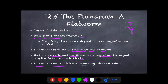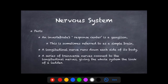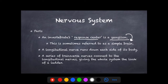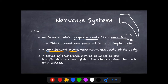Planarians show bilateral symmetry, which means they are identical on each half. Let's talk about their nervous system. A planarian doesn't have a brain as complex as ours or other animals, but they have something called a response center called a ganglion, sometimes referred to as the simple brain. Their nervous system is made up of a large nerve running down both halves of their body, called the longitudinal nerve.